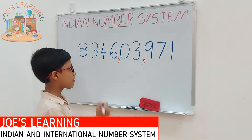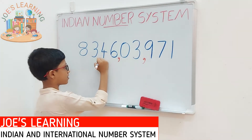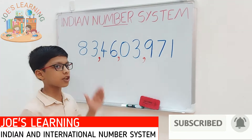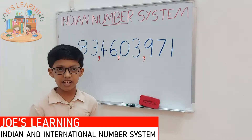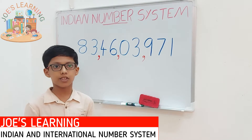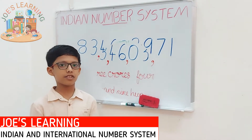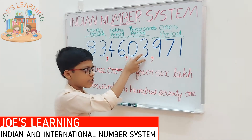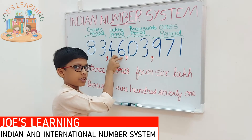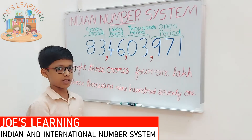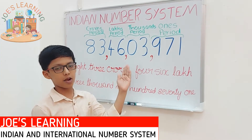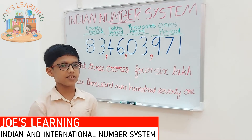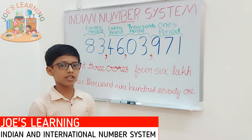We put a comma to separate these two digits. The next period is called the crores period. The crores period also consists of two places: the crores place and the ten-crores place. As you can see, in the Indian numbering system only the ones period consists of three places, while the rest of the periods consist of two places.